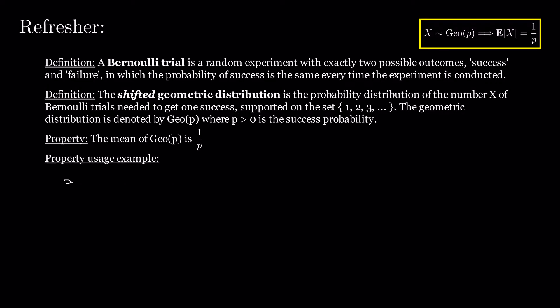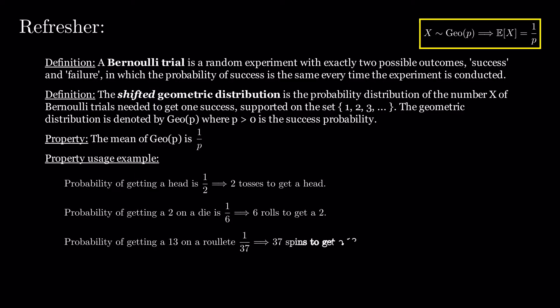Some examples in which we apply this property are the probability of getting a head is 1 over 2, so we expect to need two tosses to get a head. The probability of getting a 2 on a die is 1 over 6, so we expect to need 6 rolls to get a 2. The probability of getting a 13 on a roulette is 1 over 37, so we expect to make 37 spins to get a 13.